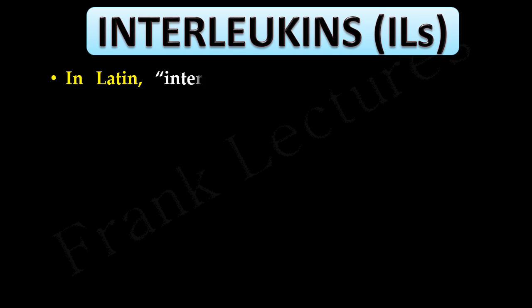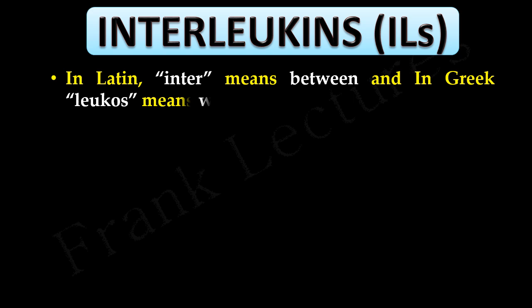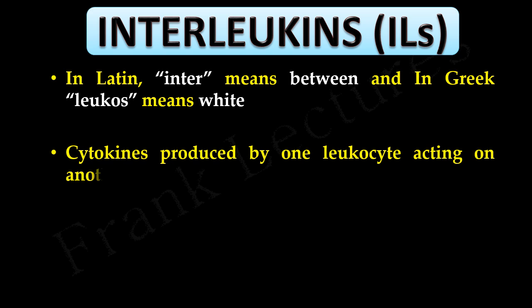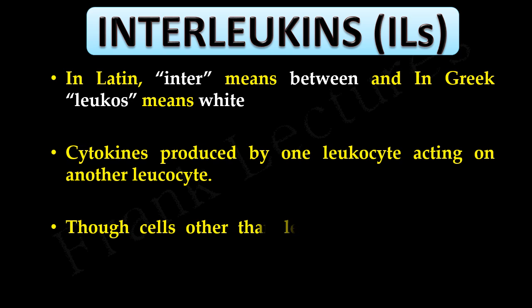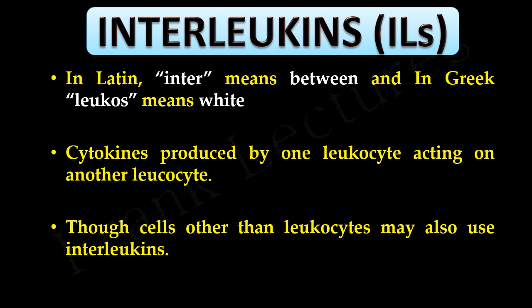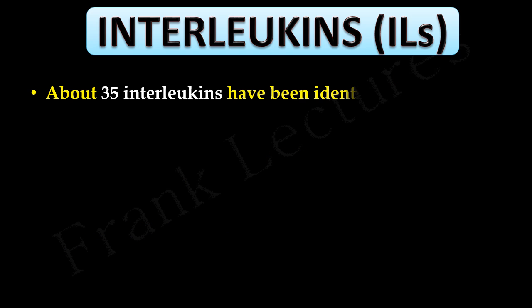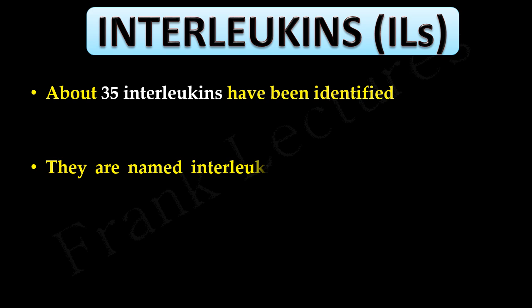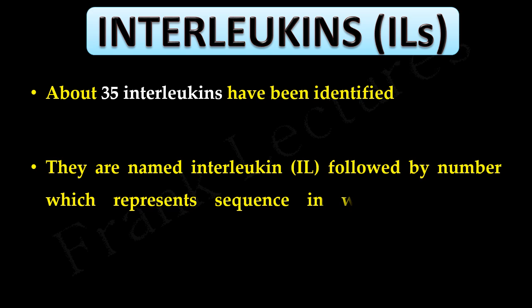Interleukins, abbreviated as IL — in Latin 'inter' means between, and in Greek 'leukos' means white — are literally cytokines produced by one leukocyte acting on another leukocyte, though cells other than leukocytes may also use them. About 35 interleukins have been identified so far. They are named interleukin (IL) followed by a number representing the sequence in which they were discovered.